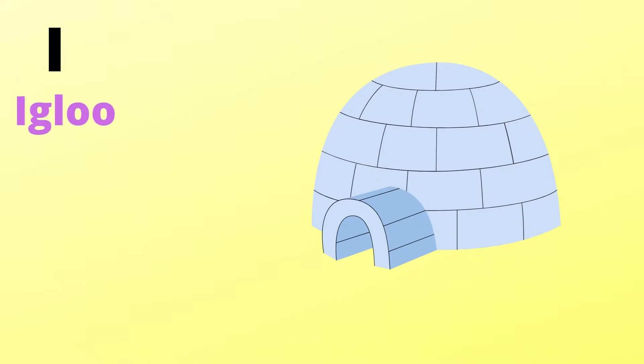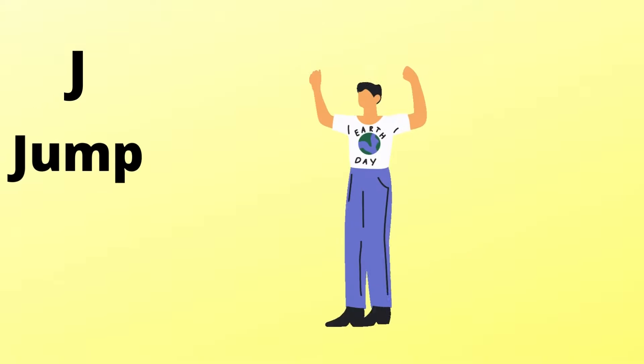I is for igloo, i-i-igloo. J is for jump, j-j-jump.